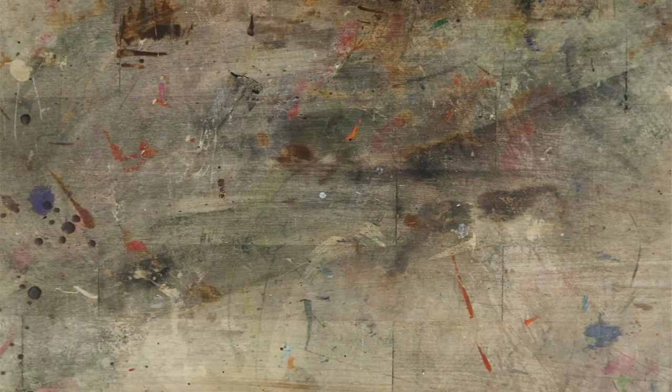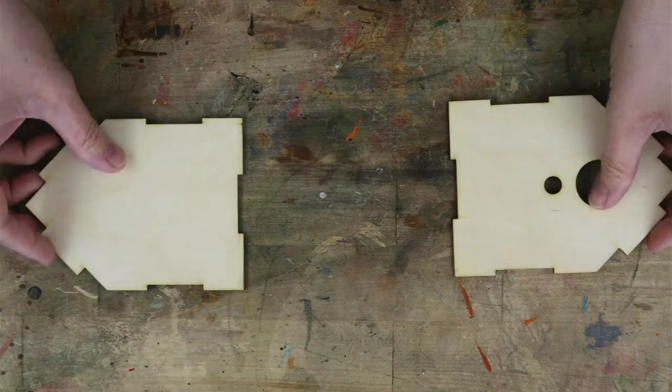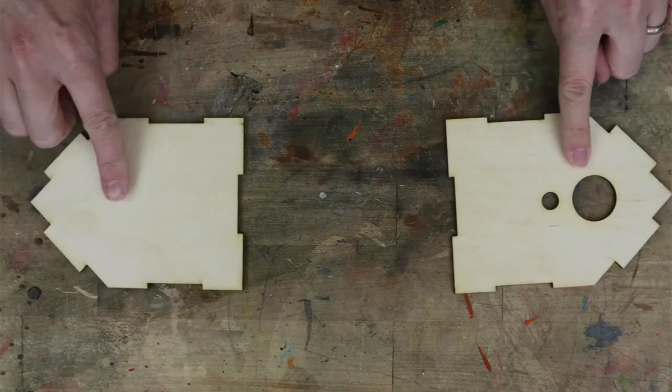Assembling the birdhouse is actually quite easy. You're going to start with the pieces of wood that make up the birdhouse. We have the front and back wall.